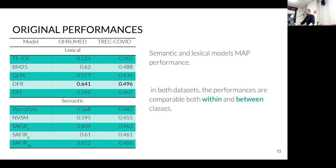Looking at the mean average precision for all models considered, lexical models are shown in the upper part of the table and semantic ones in the lower part. The performances are pretty much comparable both within classes of models and between them. As the scatter plots with the diagonal suggested, it is hard to say that a single class of models is the best performing one overall.